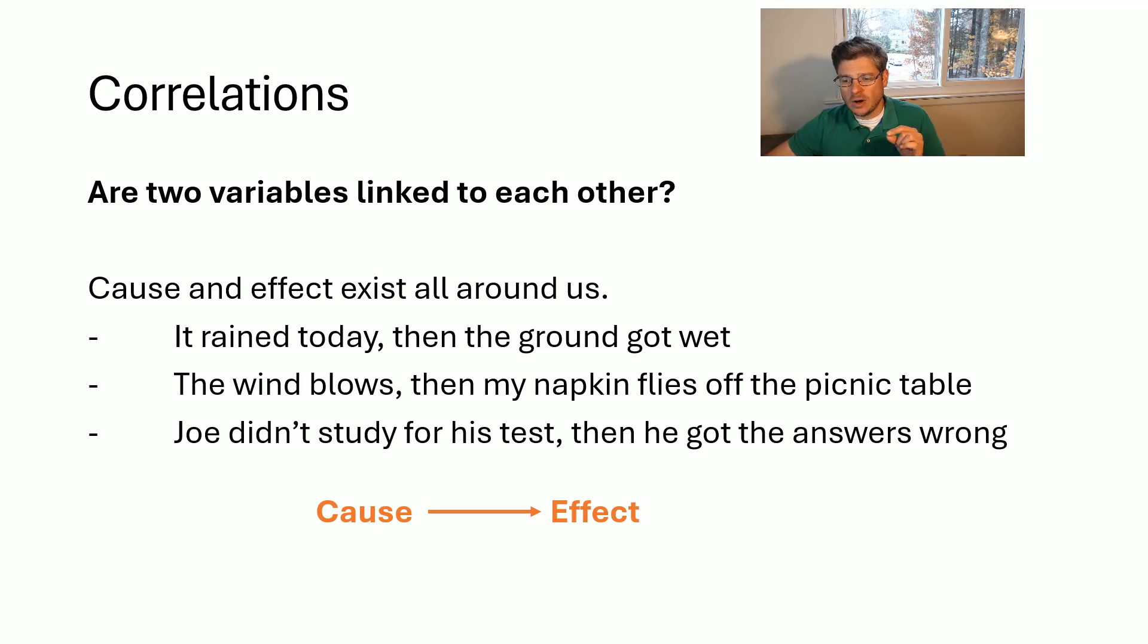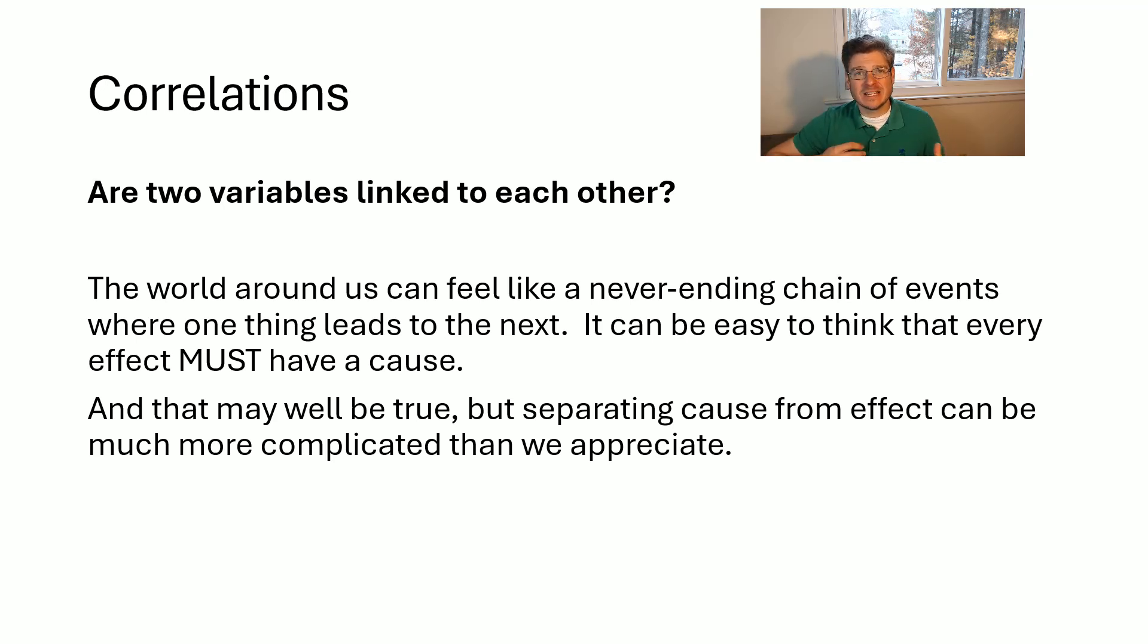And typically we always have a cause that leads to our effect. That's just how our world works. And what's also useful is that a lot of times we can look at the effect and then determine what the cause is. If the ground is wet when I go outside, well, it must have just rained. If my napkin flew off my table, then I knew it must have been the wind blowing. If Joe failed his test, well, probably he didn't study. And so cause and effect are really linked together in our daily experience and really every day can feel like a never ending chain of cause and effect with one thing leading to the other. And so it can be very, very easy for us to think that every effect must have a cause. And that might actually be true, but separating the cause from the effect can actually be much more complicated than I think we sometimes appreciate.